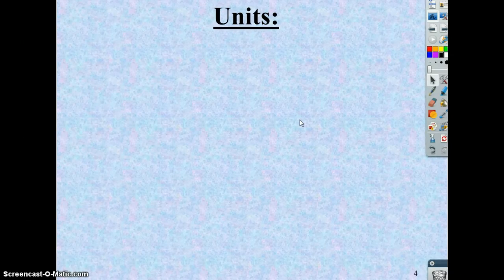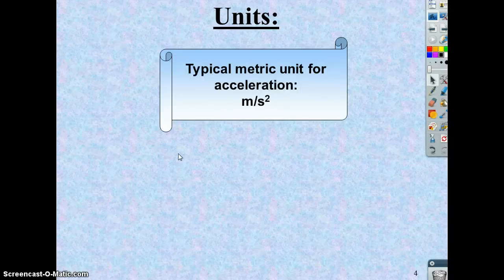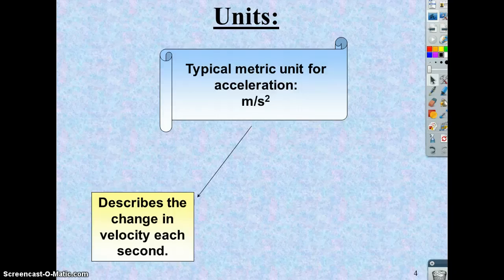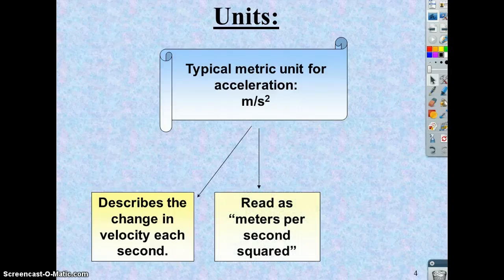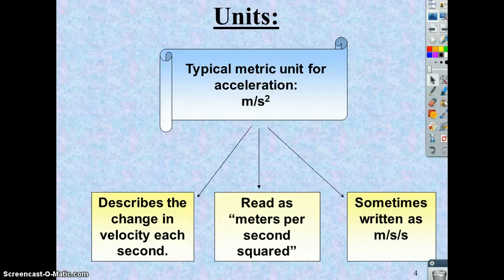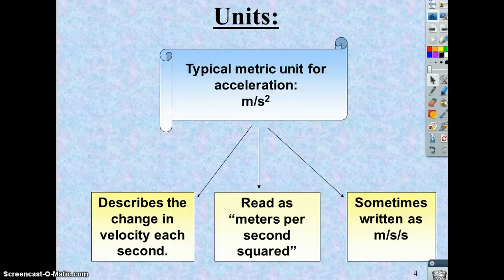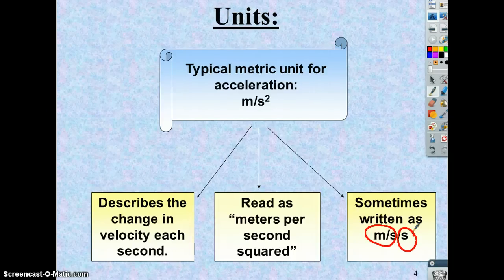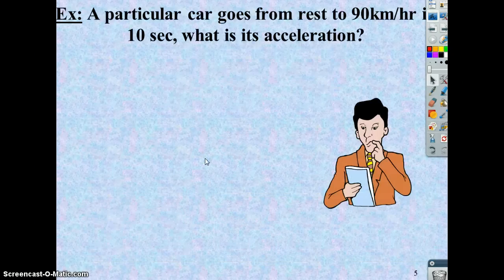Looking at the units, the typical metric unit per acceleration is referred to as meters per second squared. It describes the change in velocity each second. You'll read it as meters per second squared. Sometimes you'll see it written as meters per second per second. Because change in velocity has units of meters per second, and then we're dividing by a time interval. So we're dividing by another set of time units.